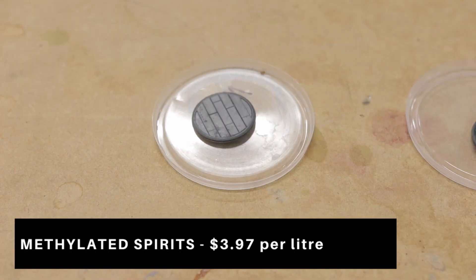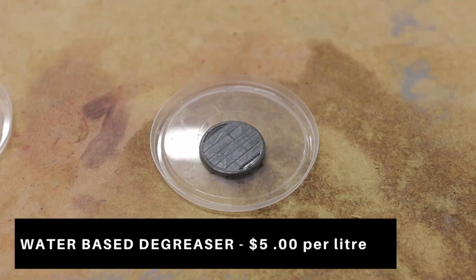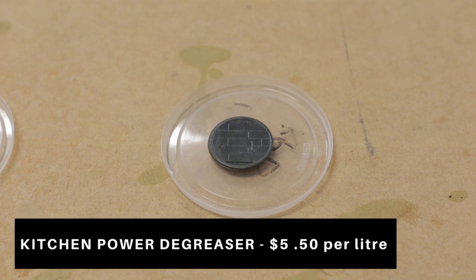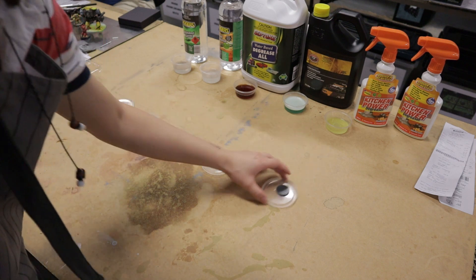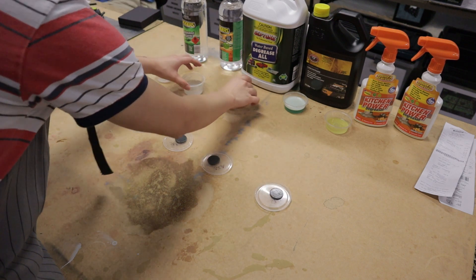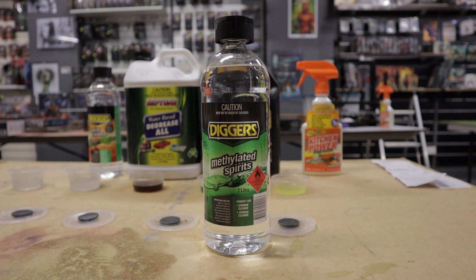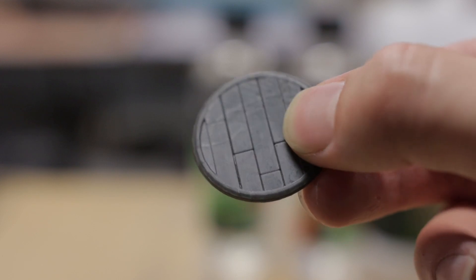Here are the side-by-sides. Overall, I think all the solutions are competent substitutes for isopropyl alcohol when it comes to cleaning 3D prints. But if I were to pick my favorite, it would be methylated spirits, because it gave the best results in my testing. And coming in at $3.97 per liter, that's a steal.